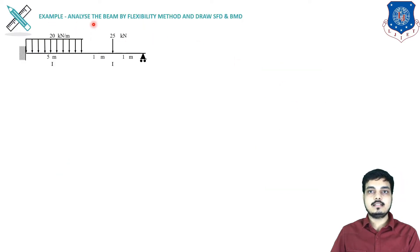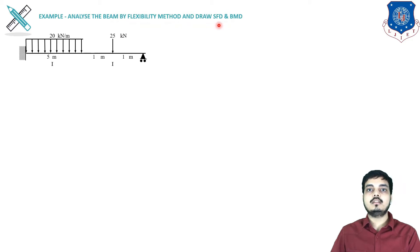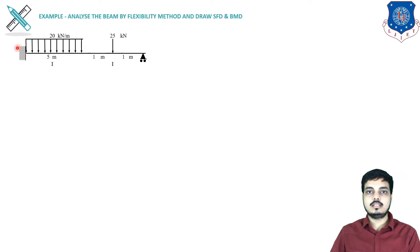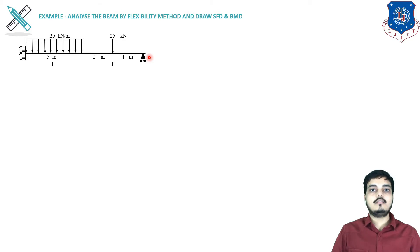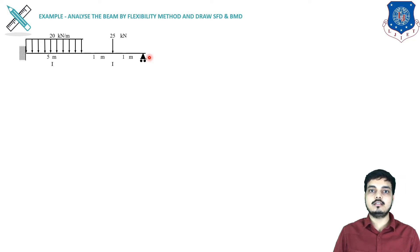Now here, analyze the beam by the flexibility method and draw the shear force diagram and bending moment diagram. A beam is given on which various loadings are applied. As you can see, there is a fixed support and a roller support. So how do we proceed with this example?